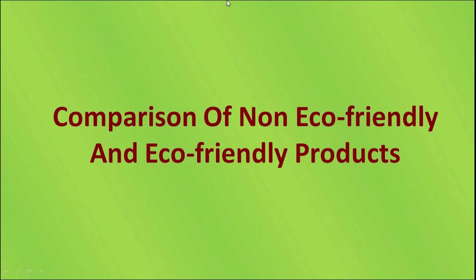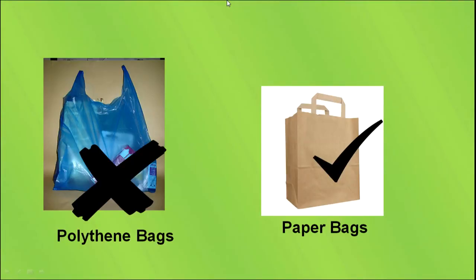Now, a comparison of non-eco-friendly products and eco-friendly products. Here is a picture of a poly bag and a paper bag. The poly bag represents a non-eco-friendly product because it is non-biodegradable — it does not decompose in the environment naturally. The paper bag represents an eco-friendly product because it is biodegradable.